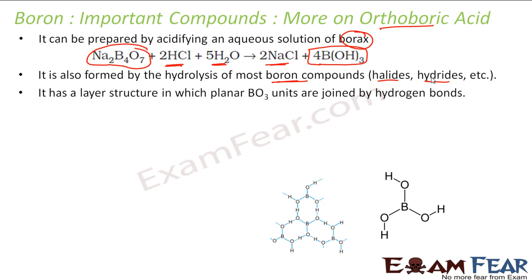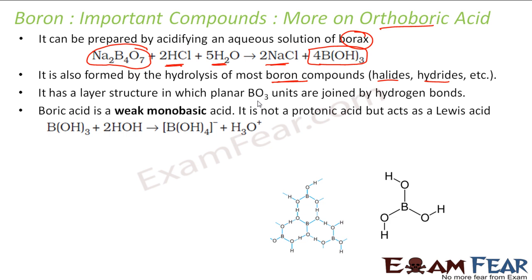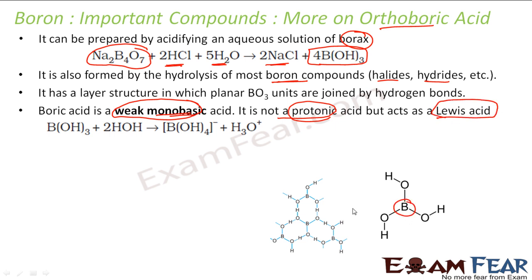Boric acid has a layer structure held together by hydrogen bonding. The single B(OH)₃ molecule does not exist in isolation — it forms a cage-like structure with hydrogen bonds between oxygen and hydrogen. It is a weak monobasic acid because it does not produce three hydrogen ions. It is not a protonic acid; it is a Lewis acid because boron is electron hungry.